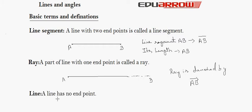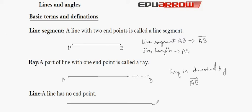Line: A line has no endpoints. Let's take a line which has no endpoints and we can extend this line in both directions indefinitely. It is denoted by AB. We use arrows in both directions because we can extend it in both directions indefinitely. Generally, we use AB to denote a line.